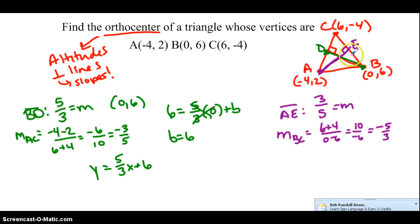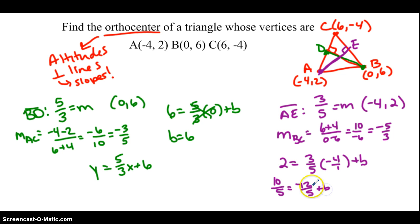Now what else do I know? I know that this segment is passing through A. I don't know where E is because it's not the midpoint. So I need to use my point A, which would be negative 4, 2, and find our slope intercept form. So we're going to do 2 equals 3 fifths times negative 4 over 1 plus B. So 2 is actually 10 fifths, just making life easier with common denominators. Negative 12 over 5 plus B. Add that over. We get 22 fifths equals B. So the equation of my other altitude is Y equals 3 fifths X plus 22 fifths.